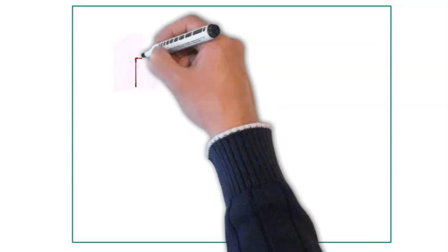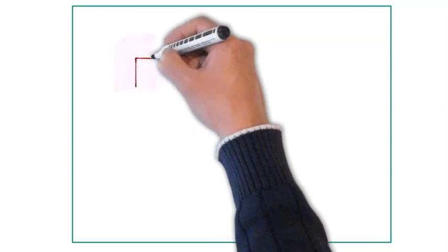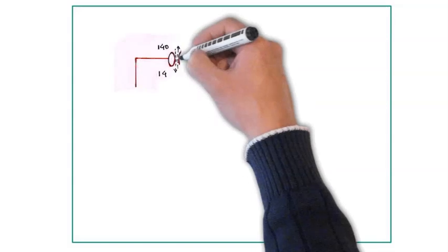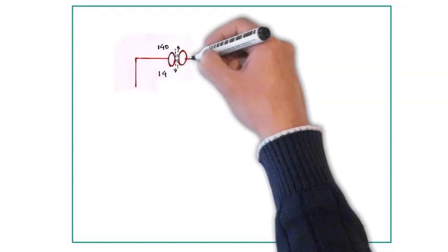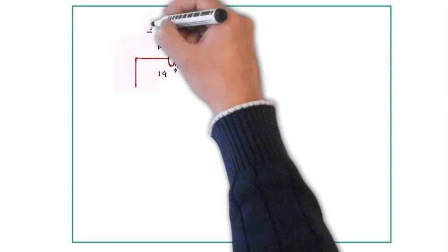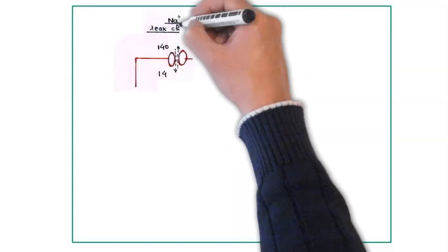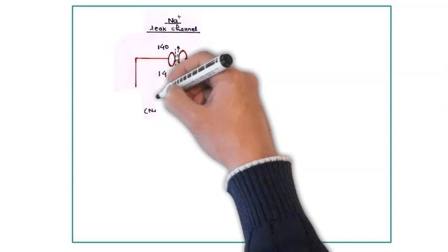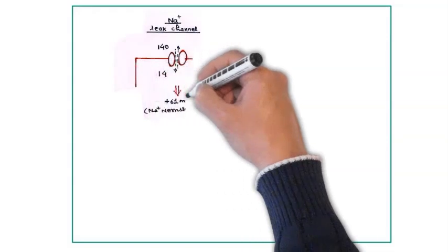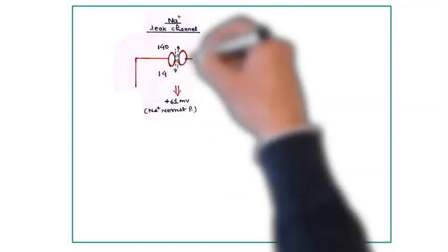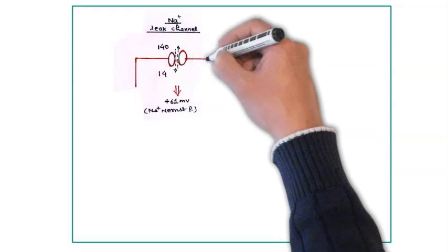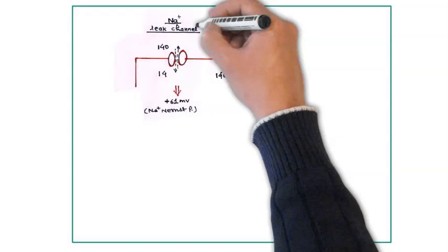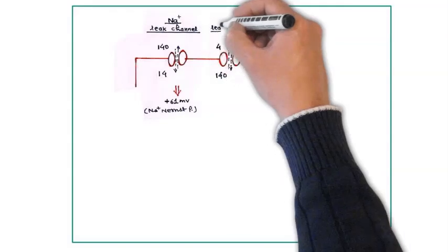The first mechanism is sodium leak channels. Obviously they try to bring RMP towards sodium Nernst potential, that is plus 61 millivolt. But permeability of sodium is less.